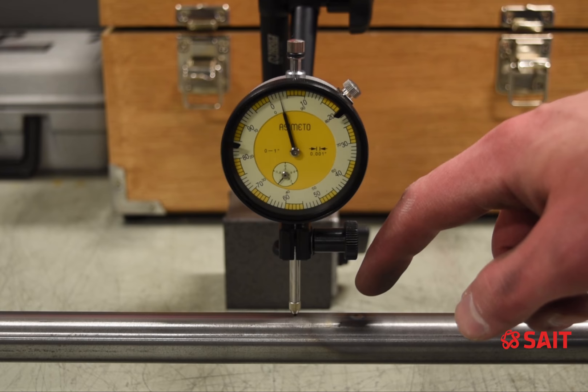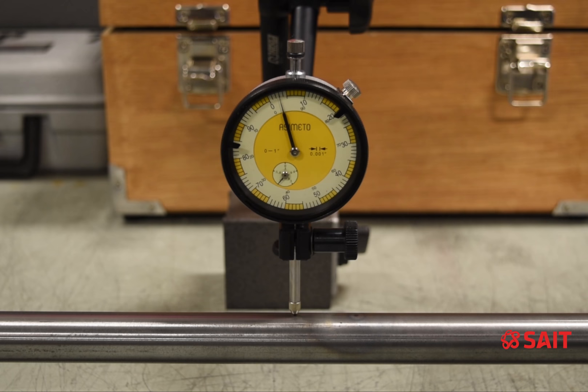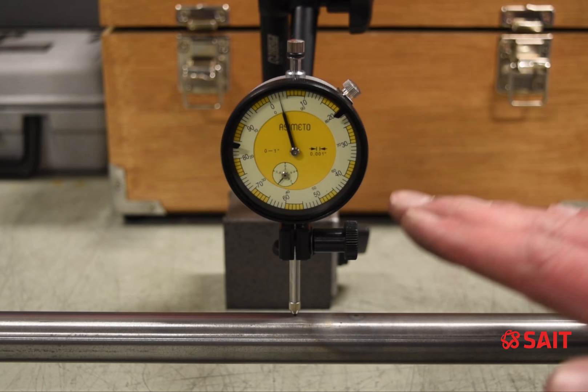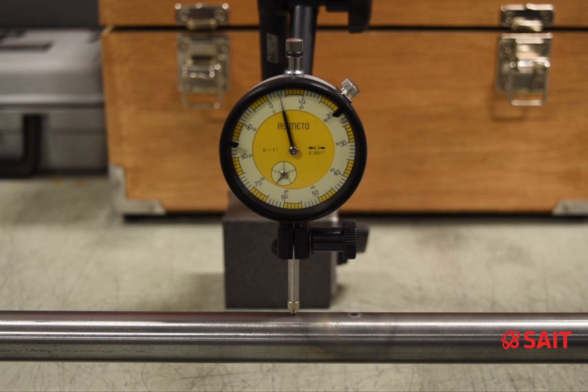Basically what happens is when we expand one side of the shaft, it's going to grow upward. But then because we've heated one spot extremely hot, it's actually going to cause those molecules to want to join together more closely. Once everything is cooled off, it should cause the high side to want to pull down a little bit.